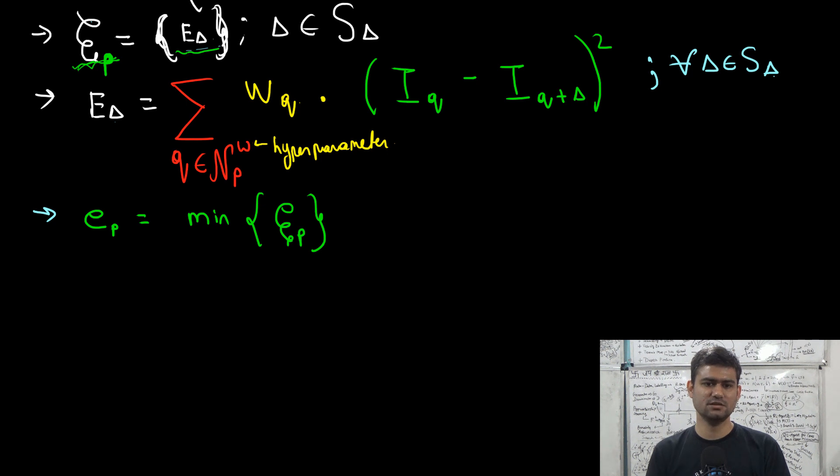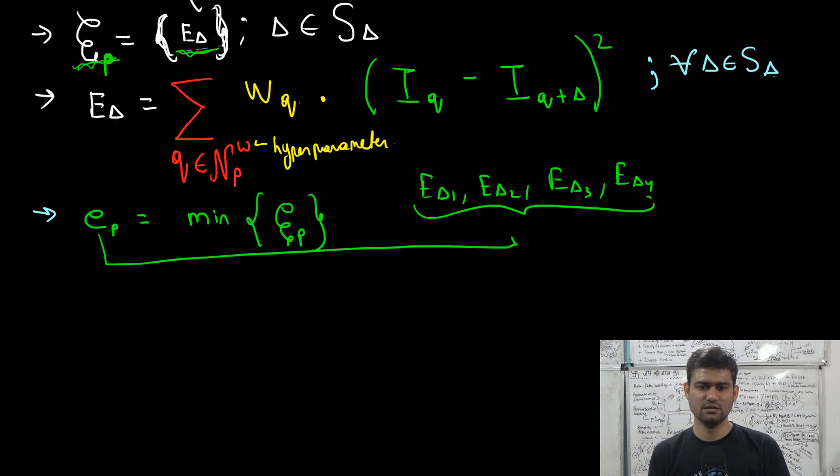E_P is min of E_P where E_P, so this operation returns the minimum of E_delta1, E_delta2, E_delta3, E_delta4. So this E_P would contain the minimum of all these four values.